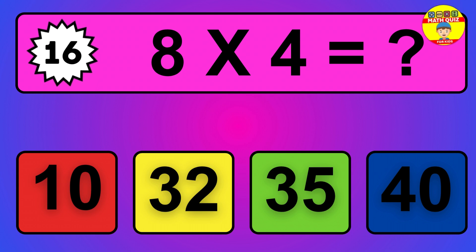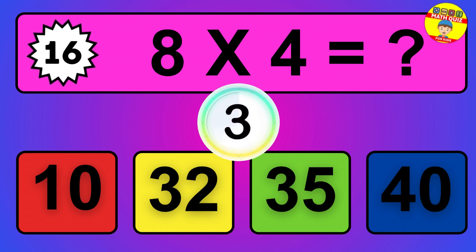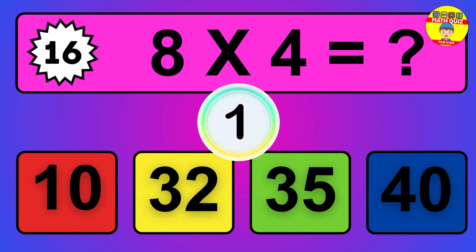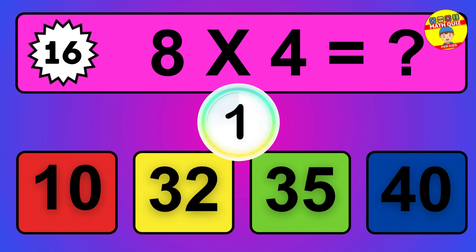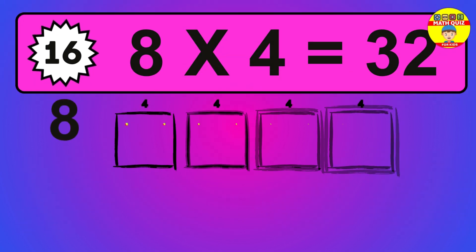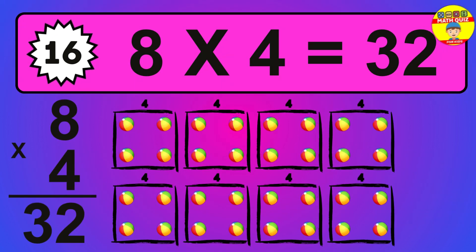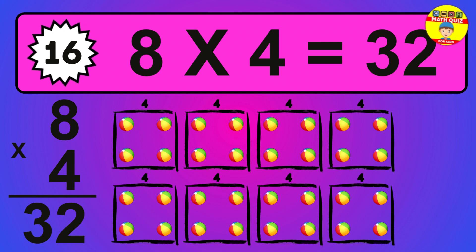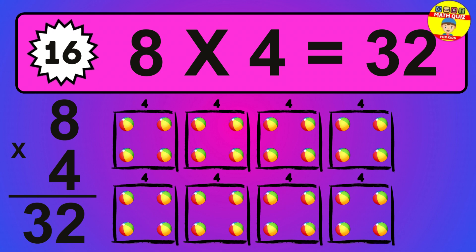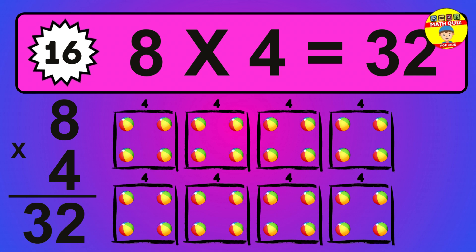Question 16. 8 times 4 equals what? So the answer is 8 times 4 is 32. To calculate, we have 8 groups with 4 balls each one. So how many balls do we have? 32 balls.